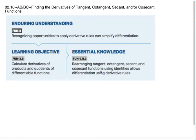This is AP, AB, and BC Calculus. We are doing Unit 2, Section 10, which is the last one of the unit: finding the derivatives of tangent, cotangent, secant, and cosecant functions. Let's go ahead and get started.